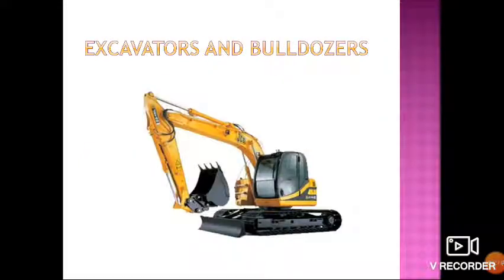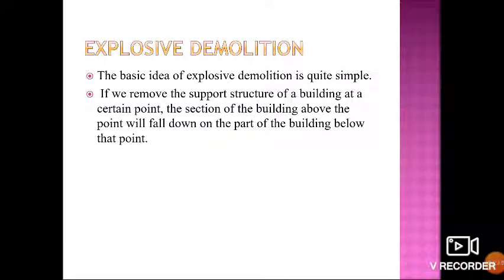This is a picture of an excavator or bulldozer. The basic idea of explosive demolition is quite simple: if we remove the support structure of a building at a certain point, the section of the building above that point will fall down onto the part below. In explosive demolition, we use explosives to remove the support structure — that is, beams and columns — so that the building collapses.